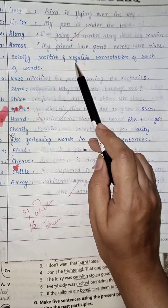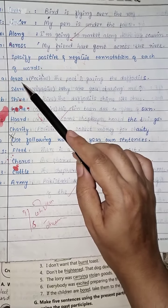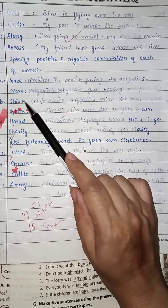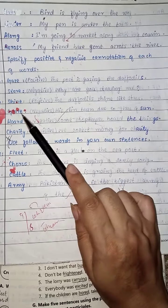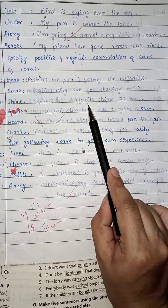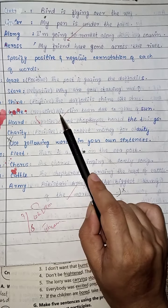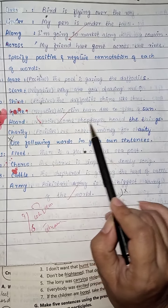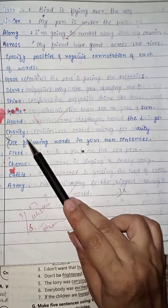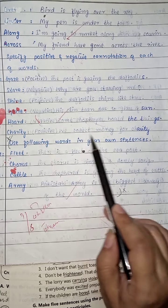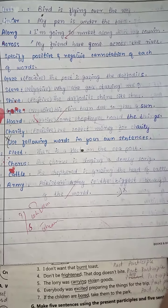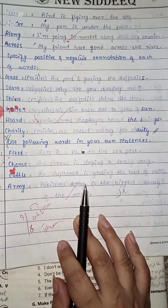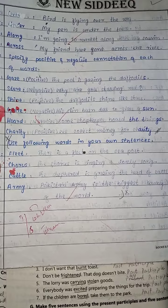We also have to write positive and negative connotations and make sentences. 'Gaze' — the poet is gazing at the daffodils (positive). 'Stare' — why are you staring at me? (negative). 'Shine' — the daffodils shine like stars (positive). 'Glare' — his skin burnt due to the glare of the sun (negative). 'Hoard' — some shopkeepers hoard things (negative). 'Collect' — we collect money for charity (positive). You have to do this on your notebook. I hope you will do it. Enough for today, class.